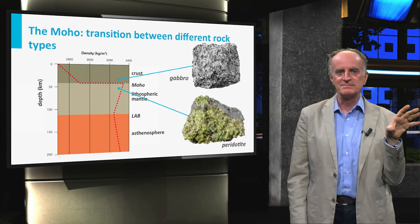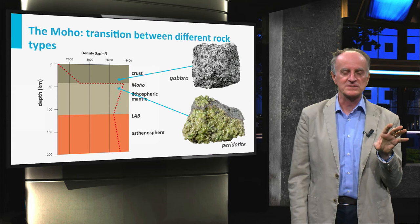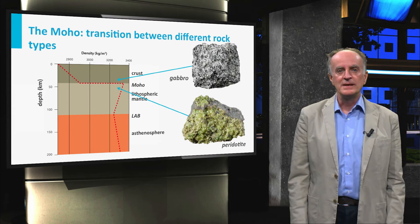Rocks above the MOHO have lower seismic velocities and are much lighter. They are typically gabbros, which are intrusive rocks with no olivine and a lot of feldspars or metamorphic rocks.